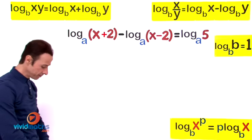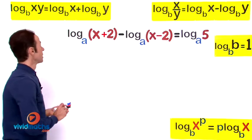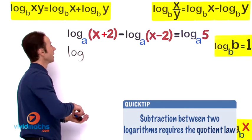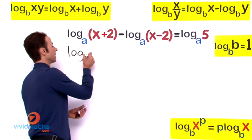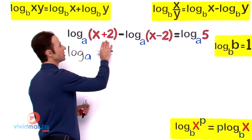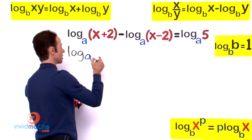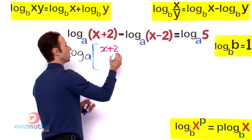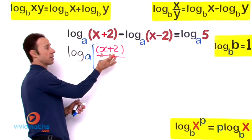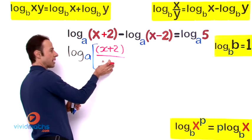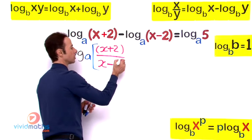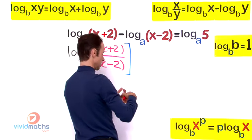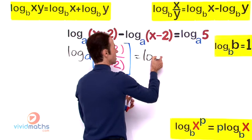So let's get started. Let's rewrite it: log base a over here. What we can do is, these are subtracting, so that means we can divide them. Let's put brackets there, put x+2 on the top, that's this part there on the top, and this part here drag and drop it under here, x-2 on the denominator there. And on this side, let's make it equal exactly as it's written: log base a 5.